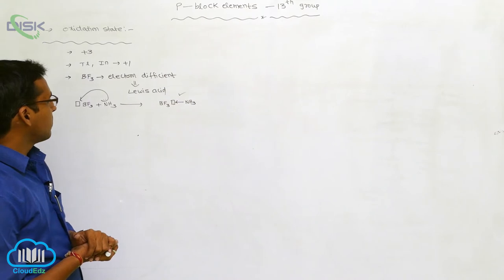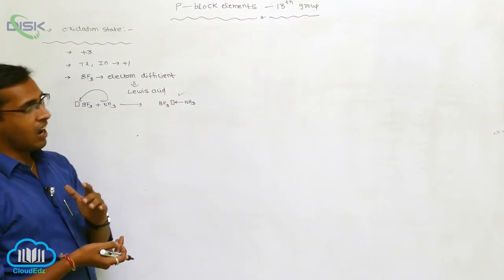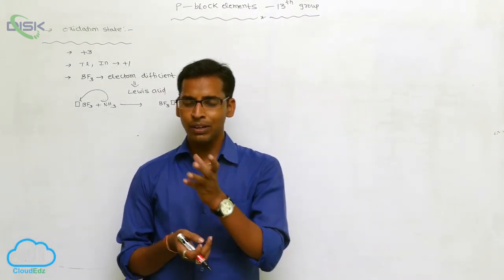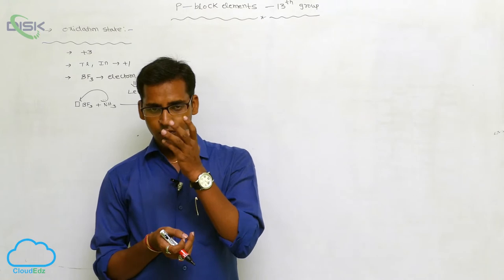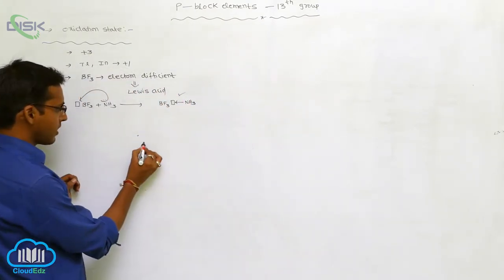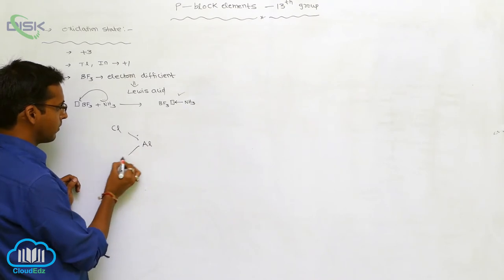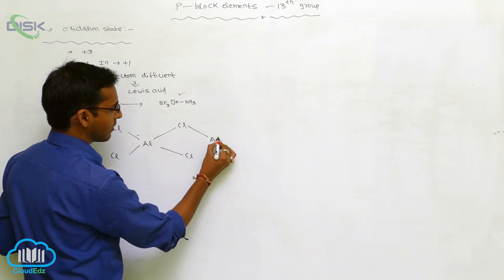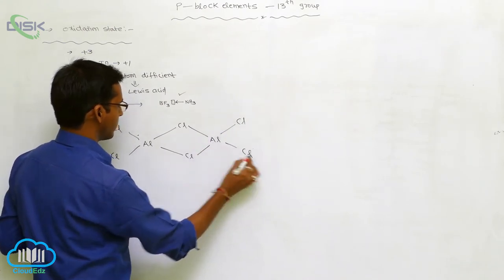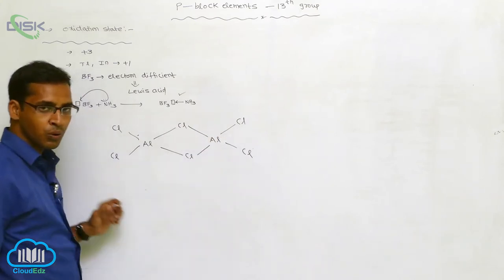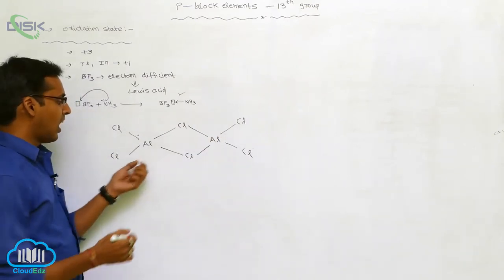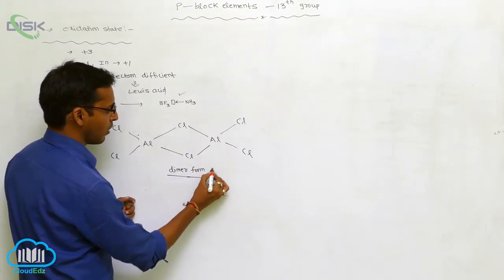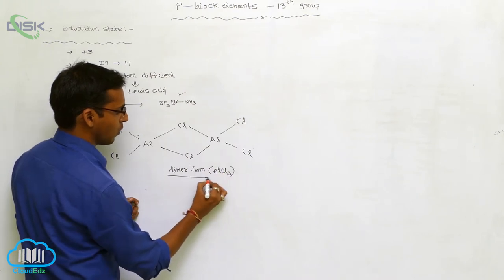Generally, boron halides are electron deficient compounds. Aluminium halides, such as AlCl3, exist in dimer form. In the dimer, two aluminium atoms are bridged by chlorine atoms — with Cl, Cl, Cl on each side — giving a total of 6 chlorines in the dimerized structure. This is the dimer form of AlCl3, aluminium trichloride.